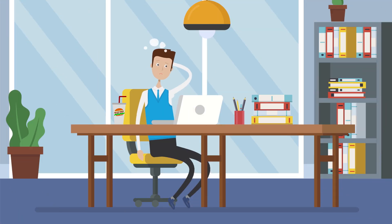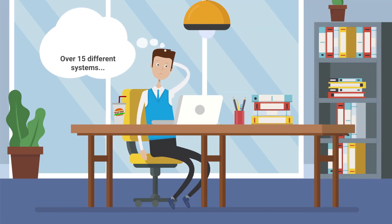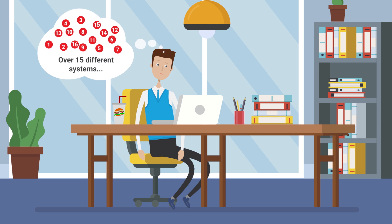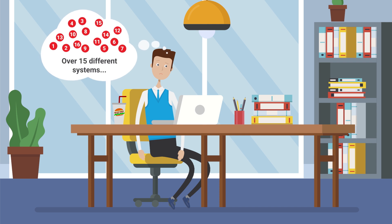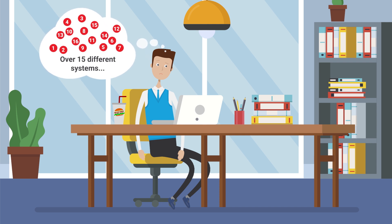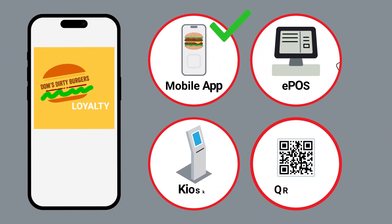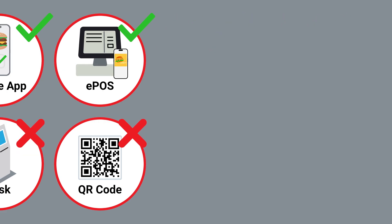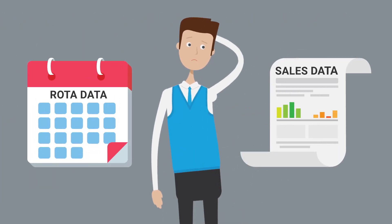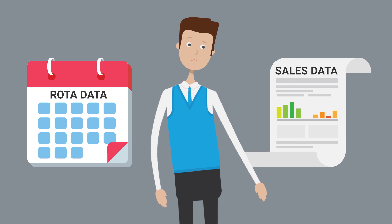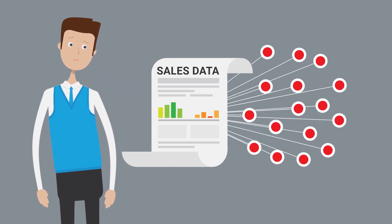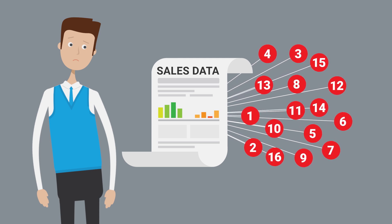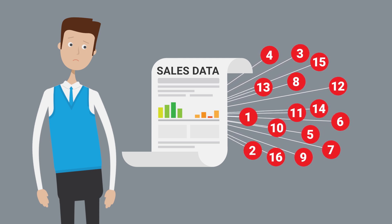Dom does a review of his business systems and discovers that he has over 15 different systems, most of which don't talk to each other. His loyalty works in mobile app and EPOS, but doesn't work with kiosk and QR code. The rotor data isn't syncing with sales data, which makes it hard to schedule employees. Sales data is kept in multiple systems, so he doesn't know what has been sold where.